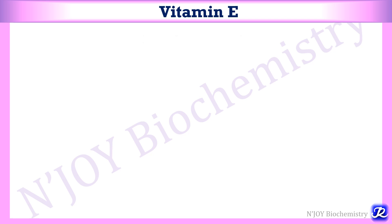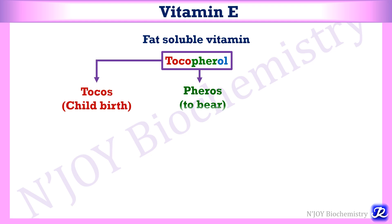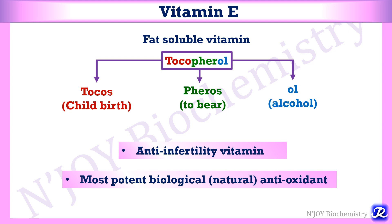Vitamin E is a fat-soluble vitamin, also known as tocopherols. The word tocopherol was derived from the Greek word tokos, which means childbirth; feros means to bear, and ol stands for alcohol. Initial studies of induced vitamin E deficiency in laboratory animals resulted in infertility, and that is why it is also known as the anti-infertility vitamin. It is the most potent natural antioxidant.